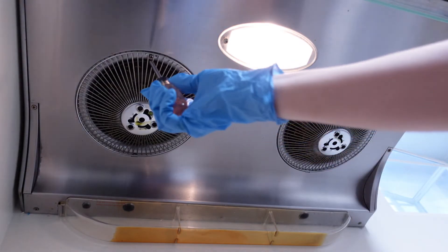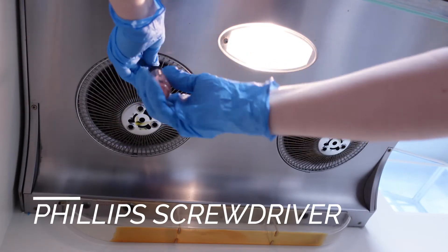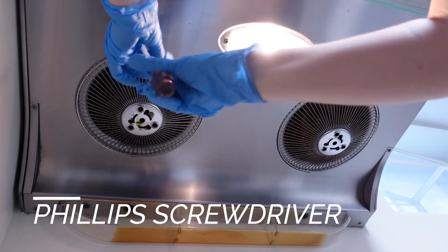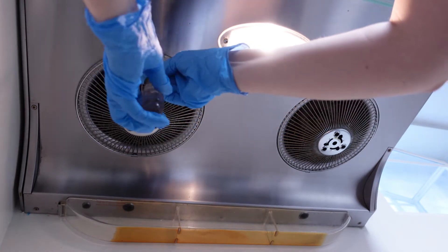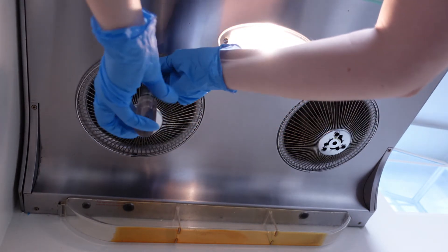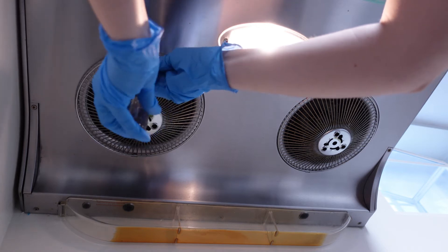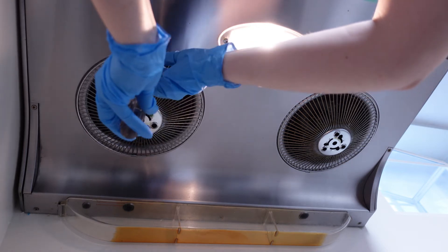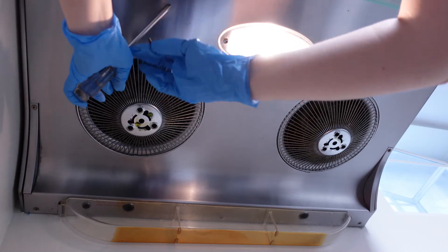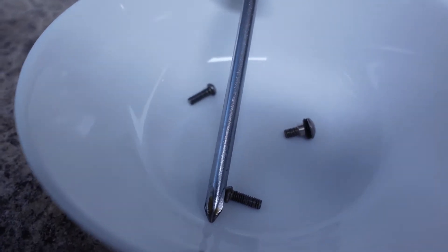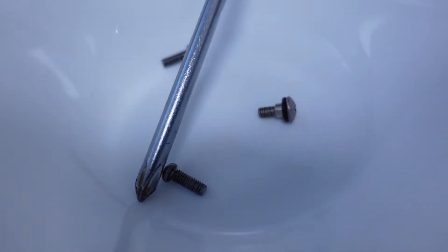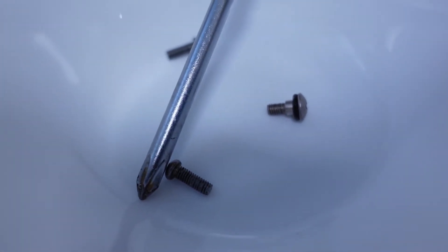I am using a Phillips head screwdriver, which is the star-shaped head, to remove the two filters covering the fans and motors inside the appliance. I find that removing the screws without losing them is probably the most challenging part, so I highly recommend putting them in a container or a plate to avoid losing them because they are tiny and spares are hard to find.